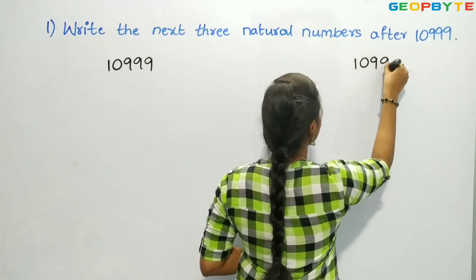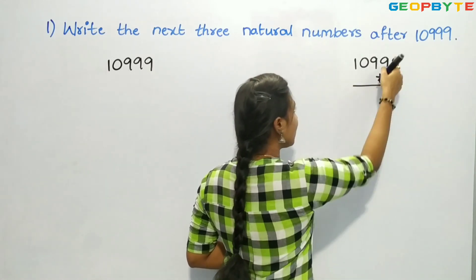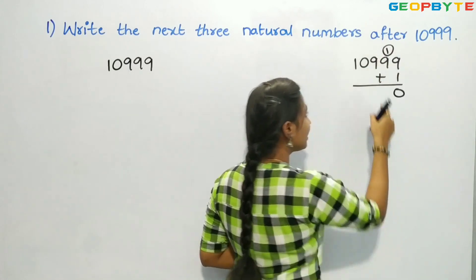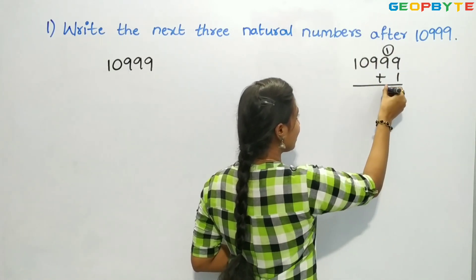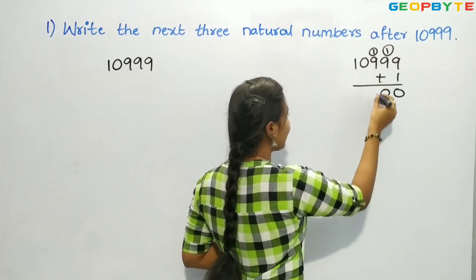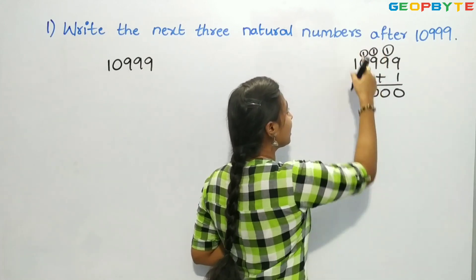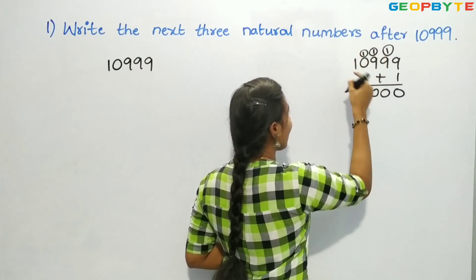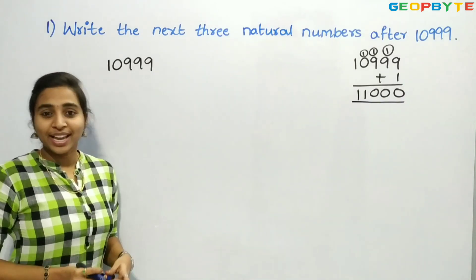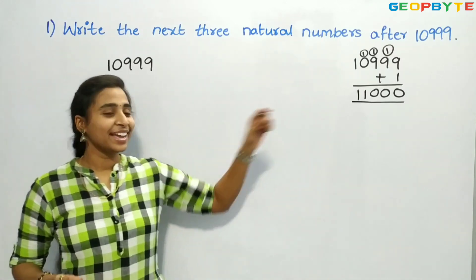So, 10,999 plus 1. 9 plus 1 is 10 — write 0, carry 1. 9 plus 1 is 10 — write 0, carry 1. 9 plus 1 is 10 — write 0, carry 1. 1 plus 0 is 1, and here we have 1. We got 11,000. So the next natural number for 10,999 is 11,000.